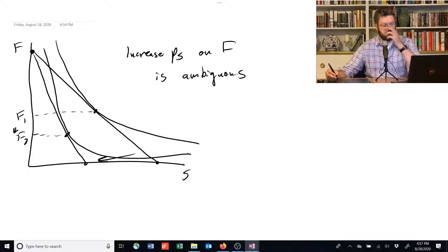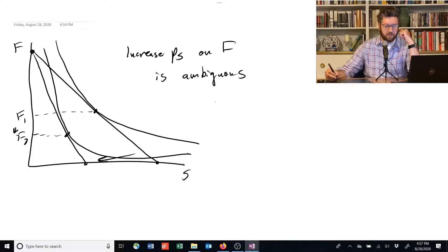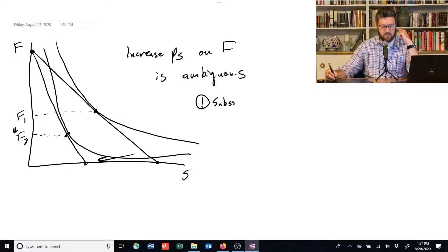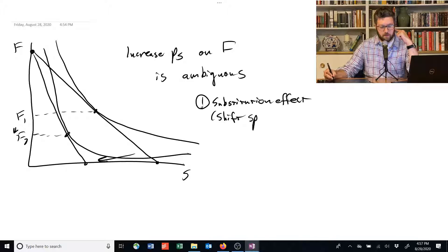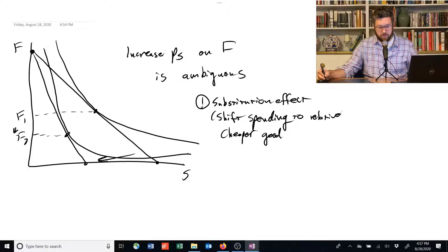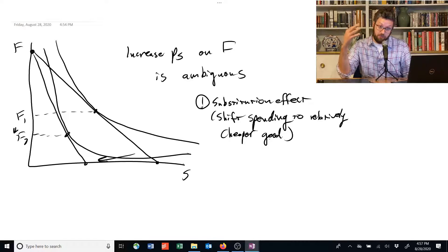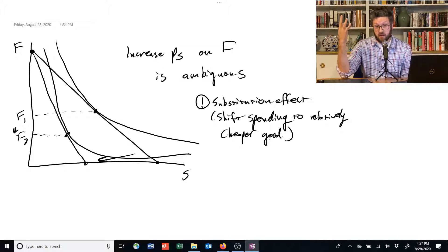Why is that the case? Well, one way that we can see this is that we can decompose the effect of this price change into two effects. One of those effects we call the substitution effect. And that means we shift spending to the cheaper good, and I should say the relatively cheaper good. So if the price of shelter goes up, which is our example, then relative to shelter, food has gotten cheaper.